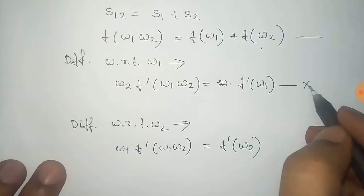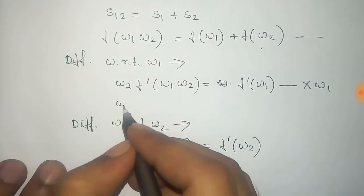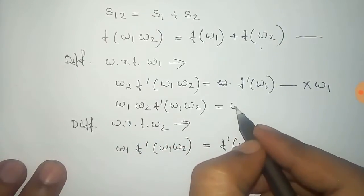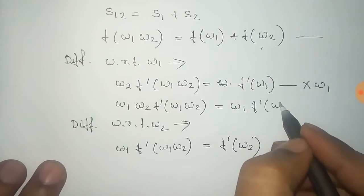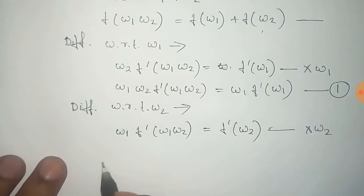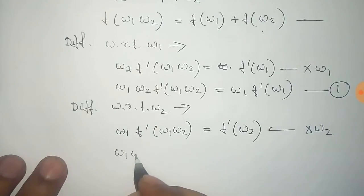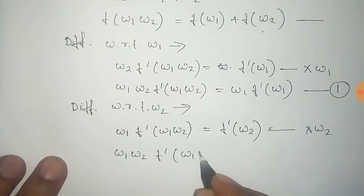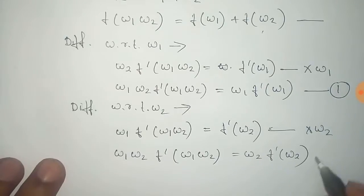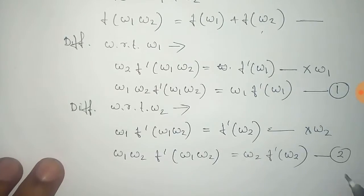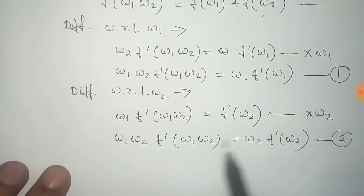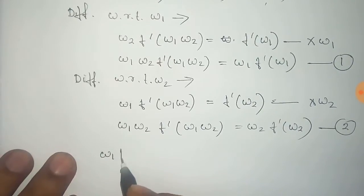Multiplying the first differentiated equation by Omega1 gives Omega1 · Omega2 · f'(Omega1 · Omega2) equals Omega1 · f'(Omega1) — call this equation 1. Multiplying the second differentiated equation by Omega2 gives a similar result — call this equation 2. The left-hand sides of equations 1 and 2 are the same, so we can equate their right-hand sides.